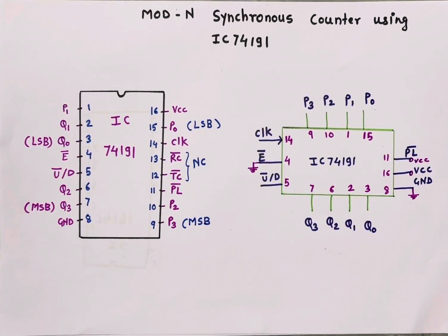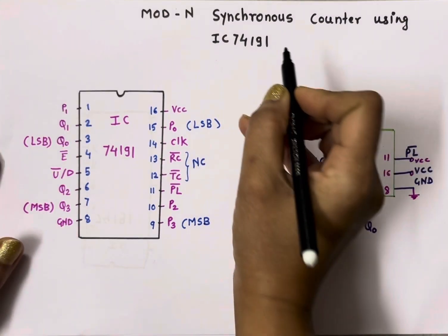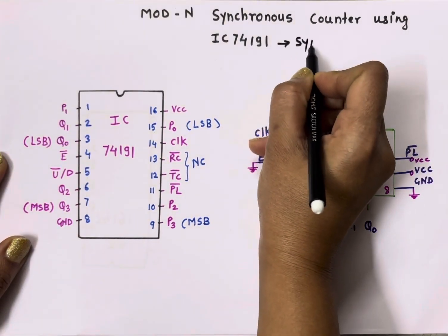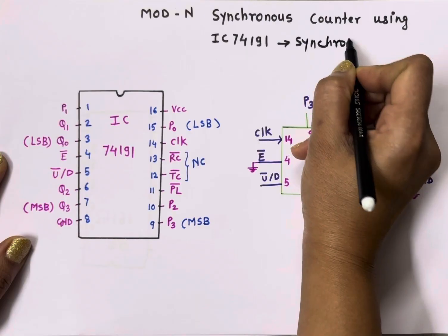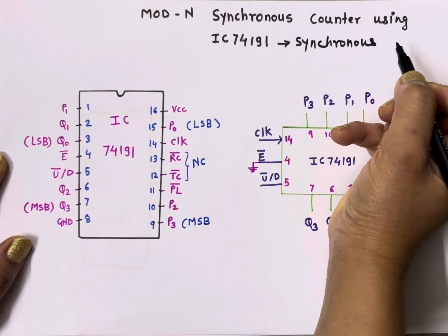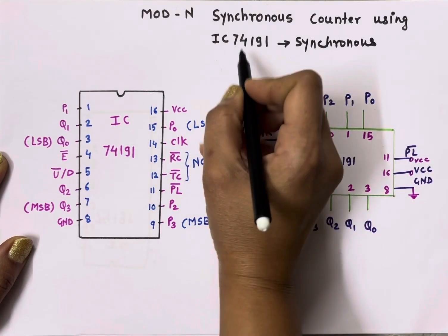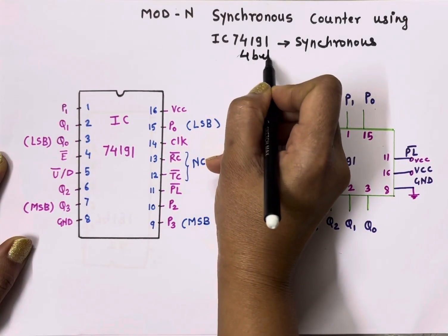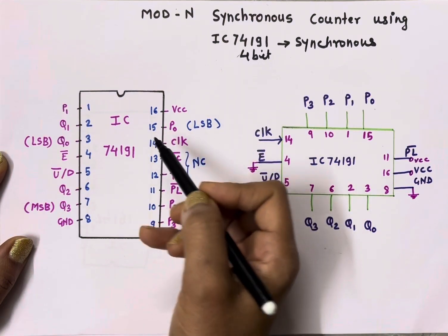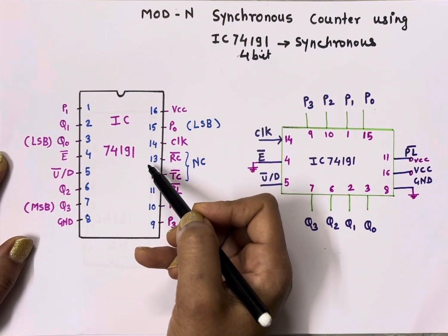Hello everyone, welcome back to my channel. Today in this video we'll talk about implementation of Mod-N synchronous counter using IC 74191. 74191 is a synchronous counter, meaning all flip-flops will get clocked simultaneously and hence they'll generate output simultaneously. This is a 4-bit counter and here we can implement up counter as well as down counter.